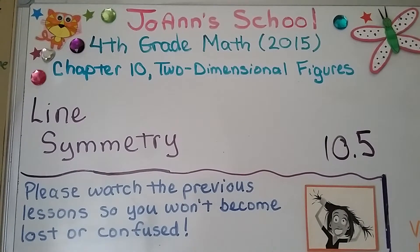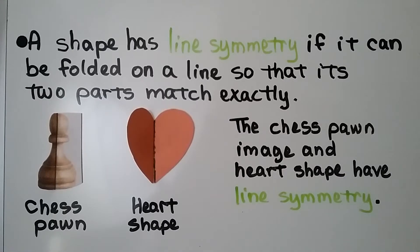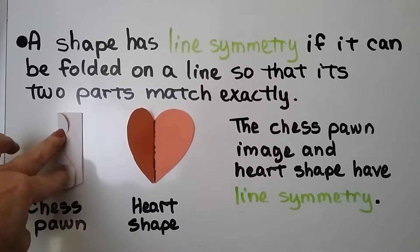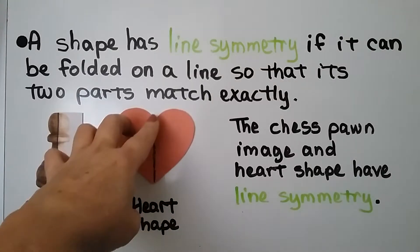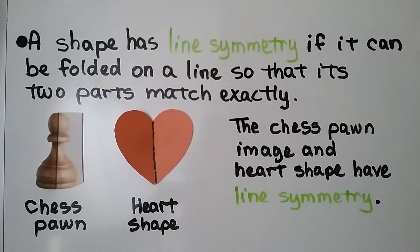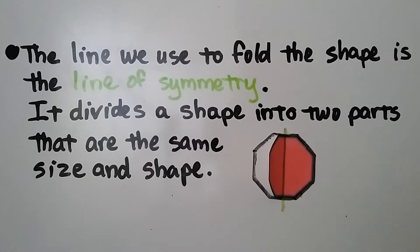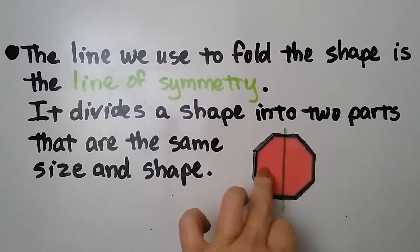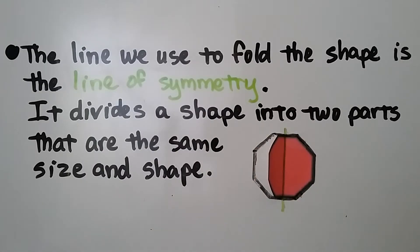Lesson 10.5: Line Symmetry. A shape has line symmetry if it can be folded on a line so that its two parts match exactly. Here we have a chess pawn — if I fold it on this vertical line, we can fold it exactly. And this heart, if I fold it on this line, which would be its line of symmetry, we would have an exact match. The chess pawn and the heart shape have line symmetry. The line we use to fold the shape is the line of symmetry — it divides a shape into two parts that are the same size and shape.